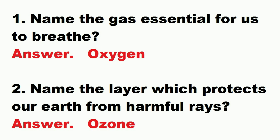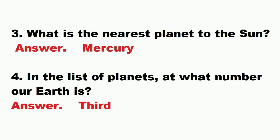Question number one: name the gas essential for us to breathe. Answer: oxygen. Question: name the layer which protects our earth from harmful rays. Answer: ozone. Question: what is the nearest planet to the Sun? Answer: Mercury. Question: in the list of planets, at what number is our Earth? Answer: third.